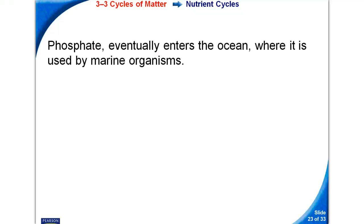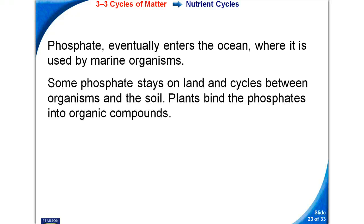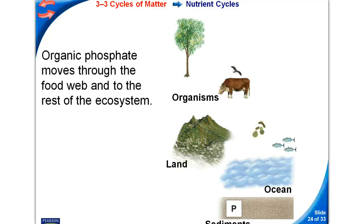Phosphate eventually enters the ocean where it is used by marine organisms. Some phosphate stays on land and cycles between organisms and the soil. Plants bind the phosphates into organic compounds. Organic phosphate moves through the food web into the rest of the ecosystem.